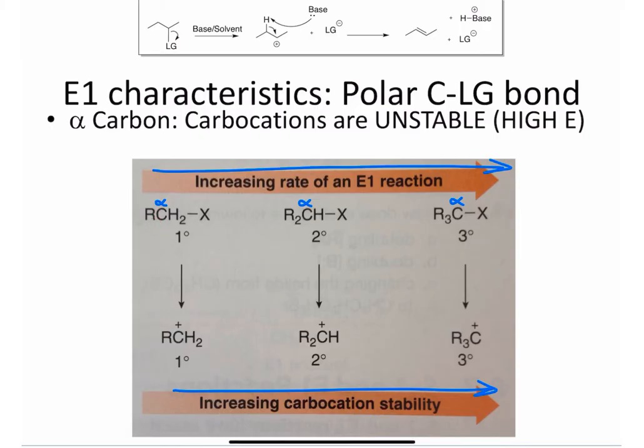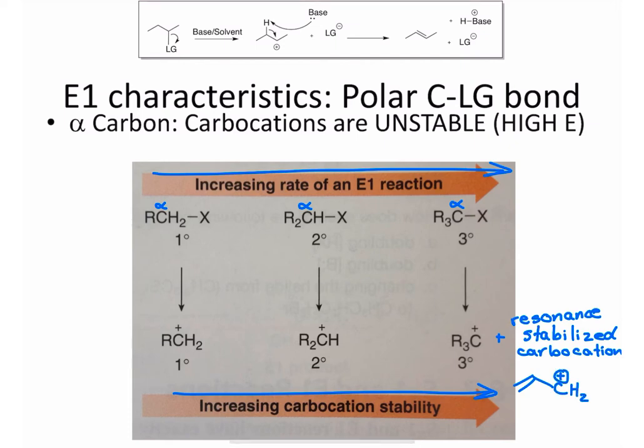One other type of carbocation that is relatively stable would be one that is resonance stabilized, such as the example I have drawn on the right. Resonance can also help to stabilize a carbocation.